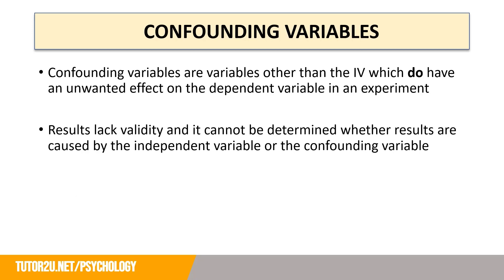Confounding variables are very similar to extraneous variables, and it's very common that people get these mixed up. Just remember, an extraneous variable is something that the researcher is trying to identify before the start of the study, and then they will try to control for them.